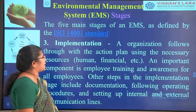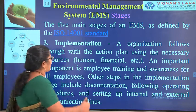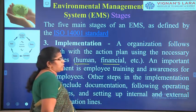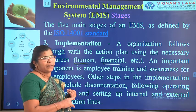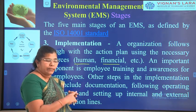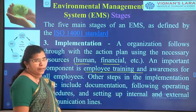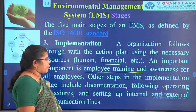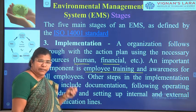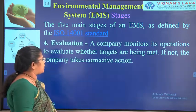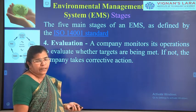In the implementation stage, the organisation sets proper targets involving human, financial, and other resources. The economy of work, health of workers — everything has to be taken care of. Proper employee training and awareness must be provided to implement the policy. Everything has to be documented in the EMS database, and internal and external factors affecting the EIA must be recorded and implemented.